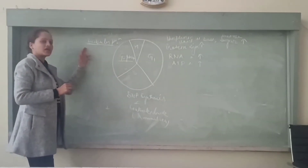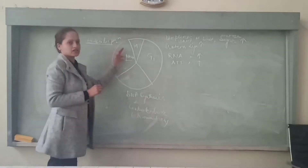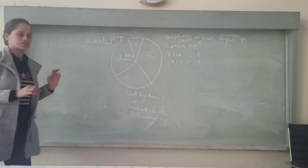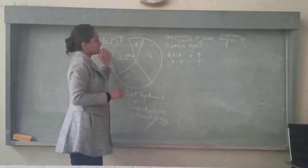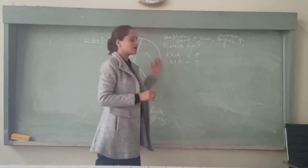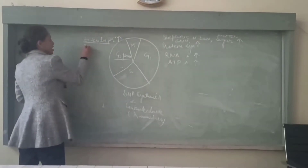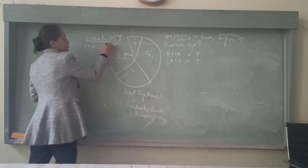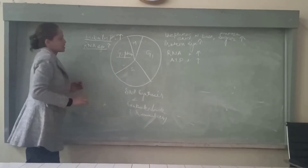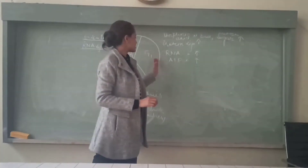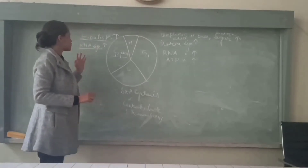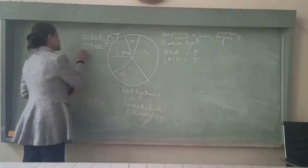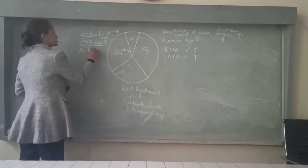In G2 phase, protein formation takes place — protein synthesis increases. Again, protein comes from RNA, so RNA synthesis also increases. Similarly, as in G1, lots of energy will be required for all the processes, so ATP synthesis will also increase.